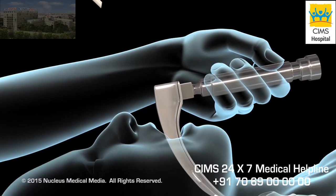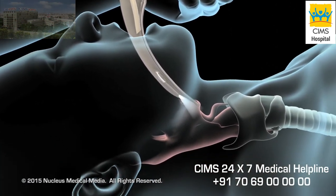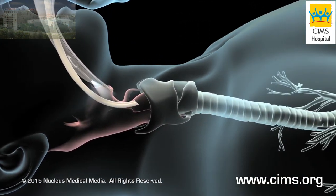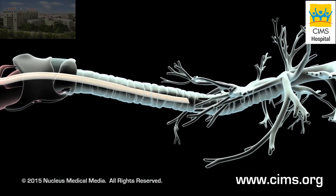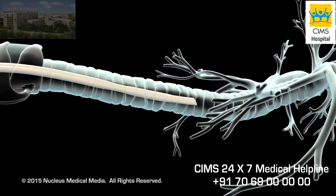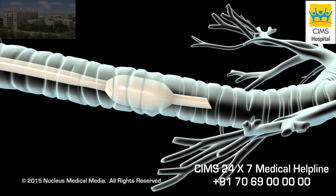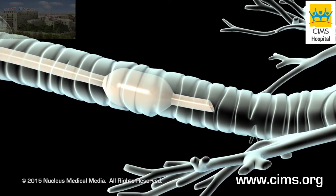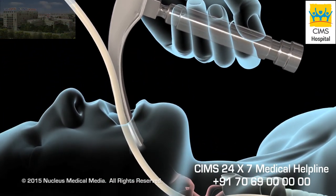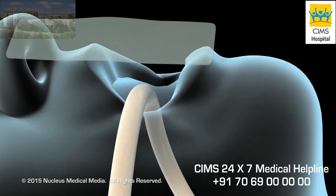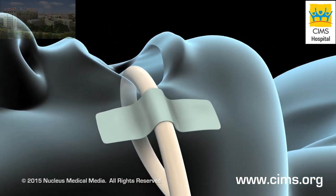He or she will then advance the tip of the endotracheal tube into the trachea. Once the endotracheal tube is in the trachea, your doctor will inflate a small balloon surrounding the tube to make sure it remains snugly in place. Your doctor will remove the laryngoscope and tape the tube to the corner of your mouth to prevent it from being jostled out of position.